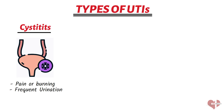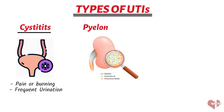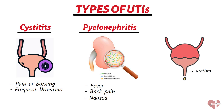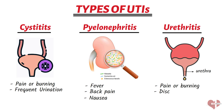If the infection spreads to the kidneys, it's called pyelonephritis, which is more serious and can cause fever, back pain, and nausea. In men, UTIs are less common but they can still happen. Men are more likely to get an infection in the urethra, the tube that carries urine out of the body. This is called urethritis, and it can cause symptoms like pain or burning when you pee, discharge from the penis, and pain or swelling in the testicles.